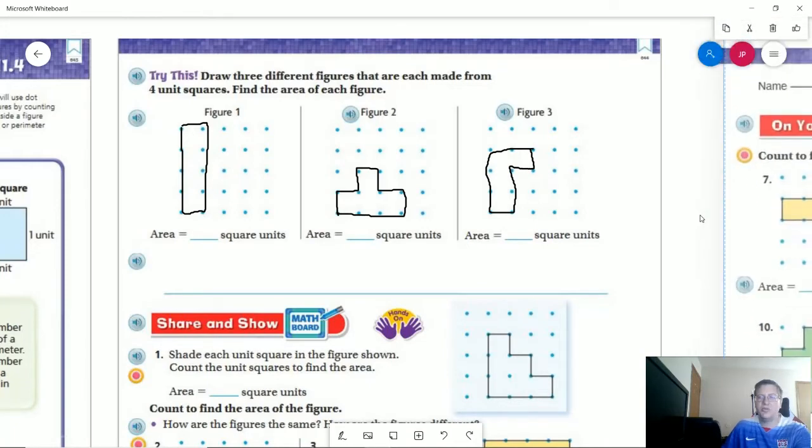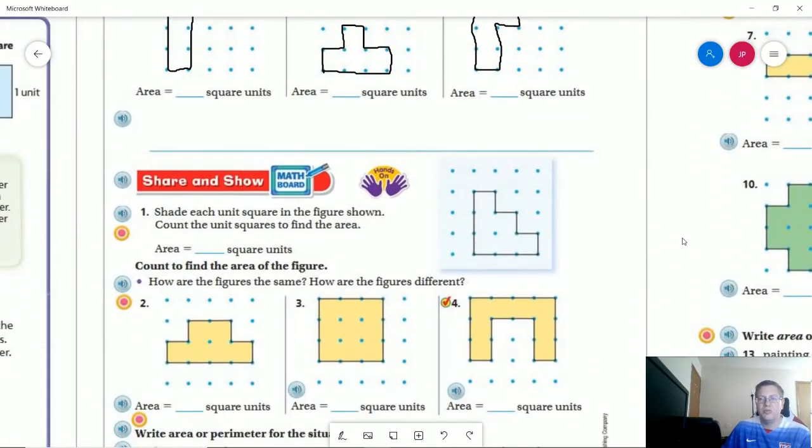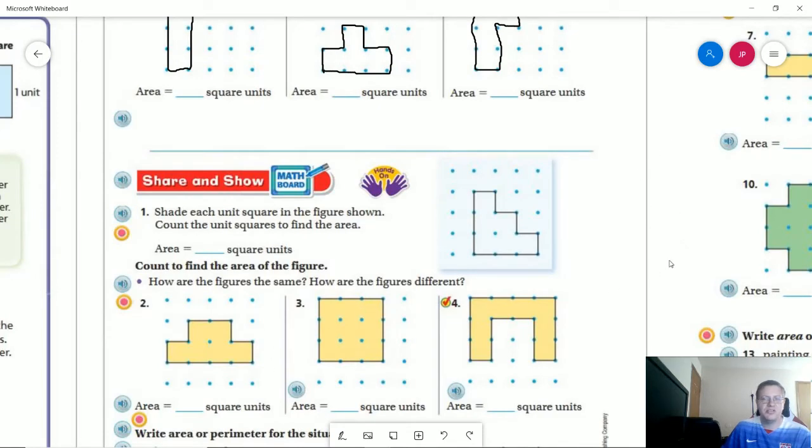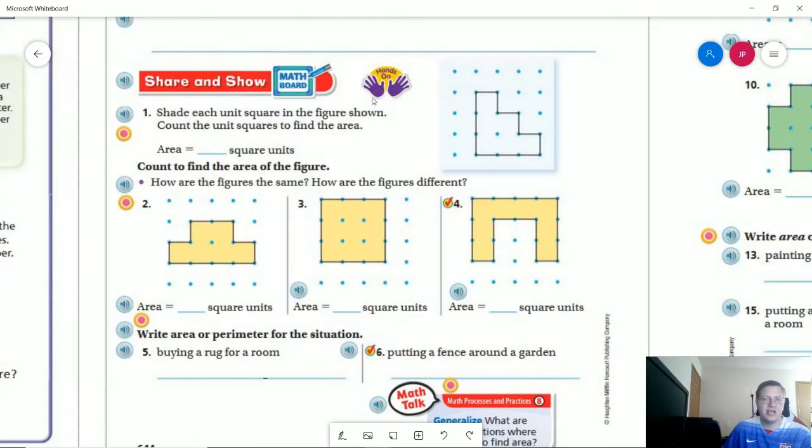When we are working with area, we are usually going to be able to just count the boxes to find the area. In some cases later on, we'll also be able to do multiplication. So if I have one, two, three in a row and I have three rows of three, I could multiply to get my answer. I'm not going to be able to do that for every single one, especially when we're working with shapes like this.